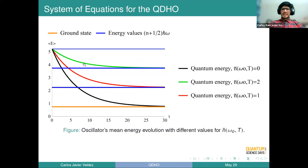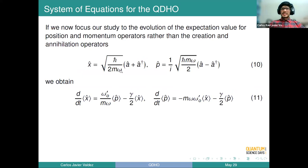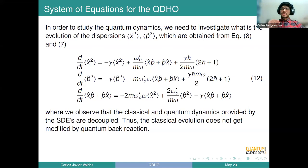We can observe this behavior in the following figure. It is also interesting that instead of working with creation and annihilation operators, we can work with position and momentum. We obtain an equation that resembles the Ehrenfest theorem, and when we take the classical limit we recover the classical equations for the damped harmonic oscillator. But if we move to study the dispersions, we arrive at equation 12. The important point is that equations 11 and 12 form a decoupled system — the classical dynamics is in some sense independent of the quantum dynamics.